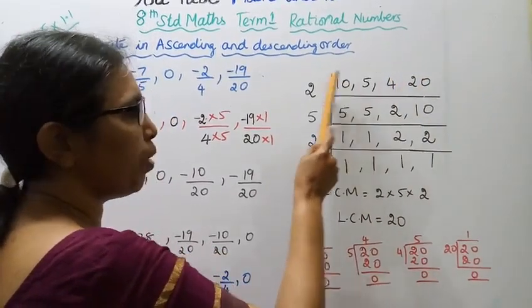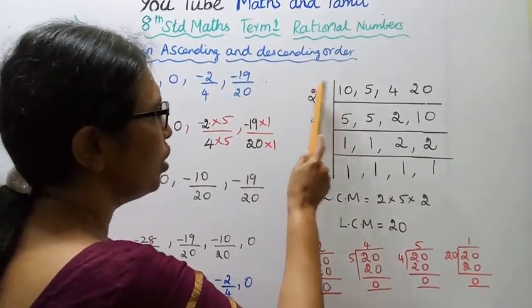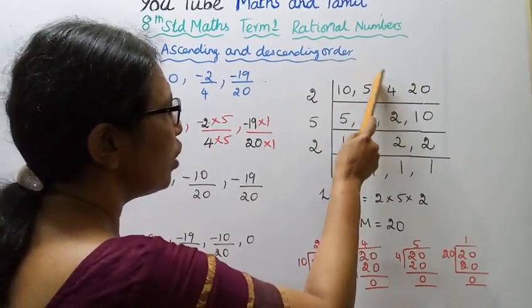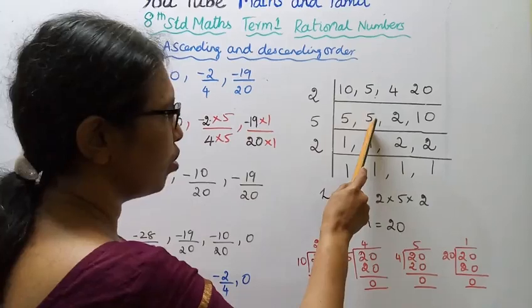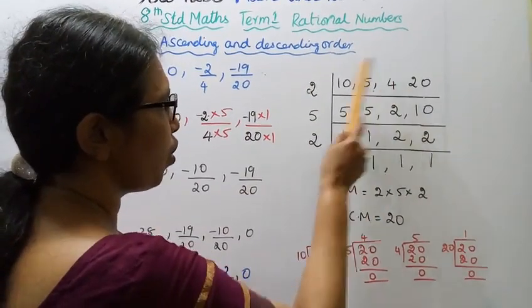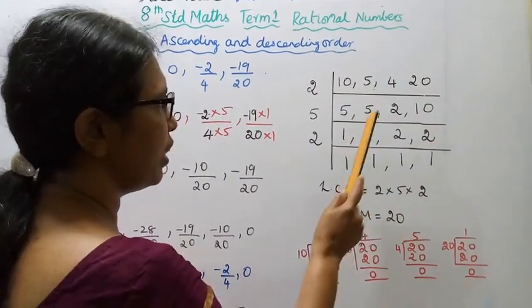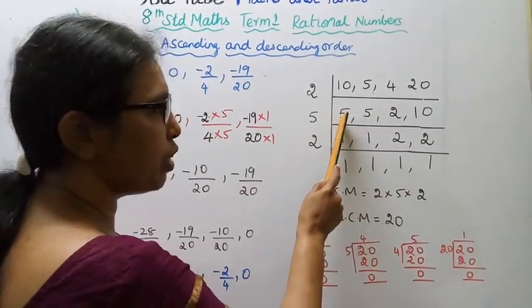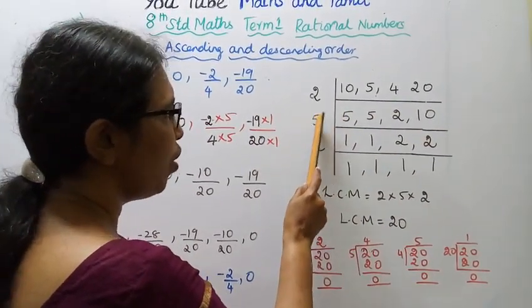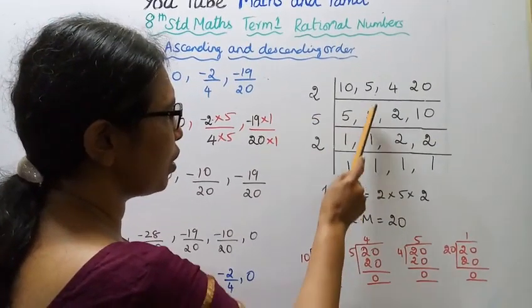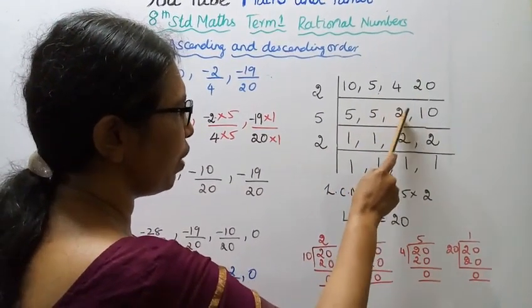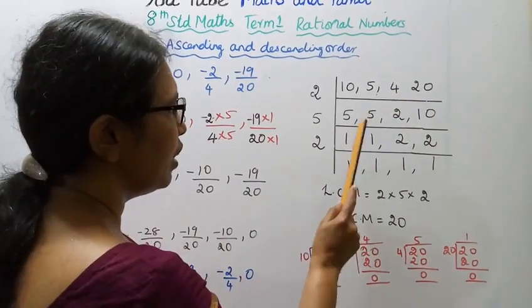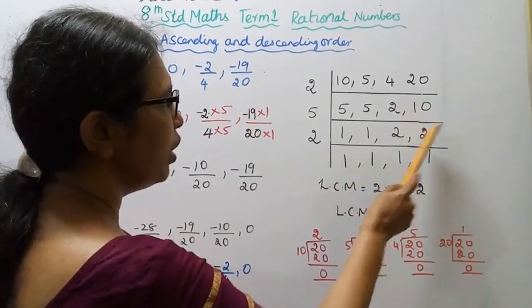Finding the LCM: 2 divides into 10, 5, 4, 20 giving 5, 5, 2, 10. Then 2 again gives 5, 5, 1, 5. Then 5 divides to give 1, 1, 1, 1. The LCM is 2 × 5 × 2 = 20.